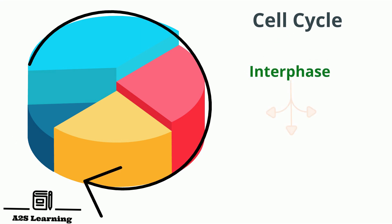Interphase is further divided into three stages: G1, S and G2. G1 stands for gap 1, S stands for synthesis and G2 stands for gap 2.